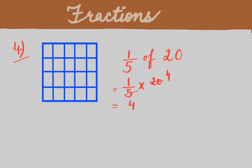Now we will shade 4 parts — you can shade any 4 parts. 1, then 2, then 3, then 4. I think this topic is clear to everyone. Thank you.